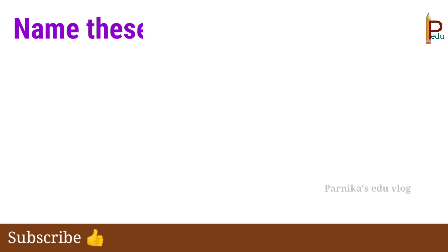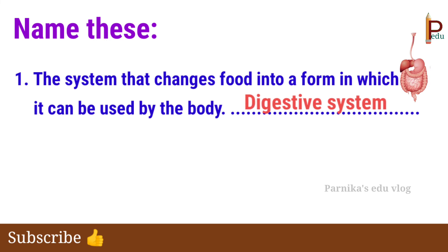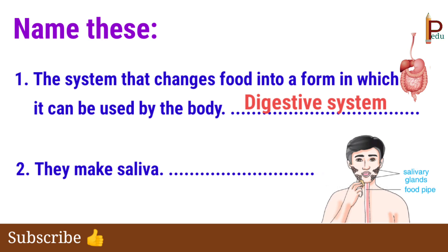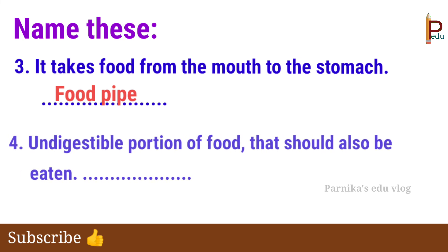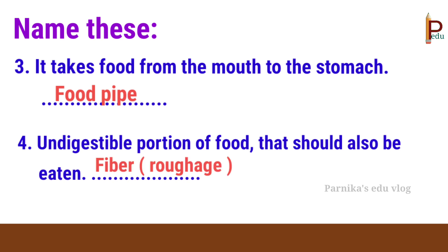Next, name these. First one: the system that changes food into a form in which it can be used by the body — the answer is the digestive system. Second one: they make saliva — the answer is salivary glands. Third one: it takes food from the mouth to the stomach — the answer is food pipe. Fourth one: the undigestible portion of food that should also be eaten — the answer is fiber, nothing but roughage.